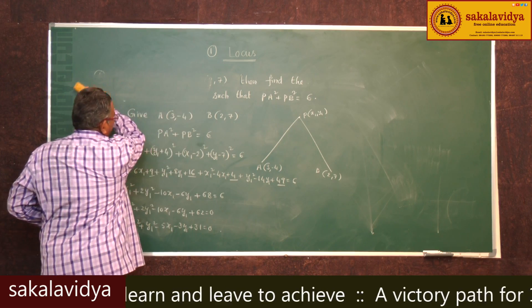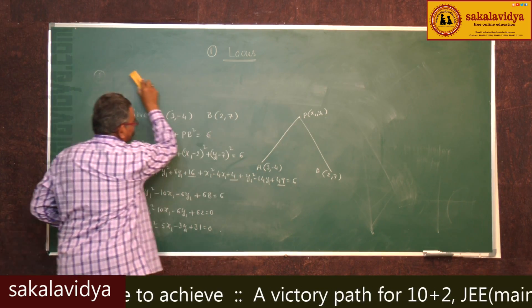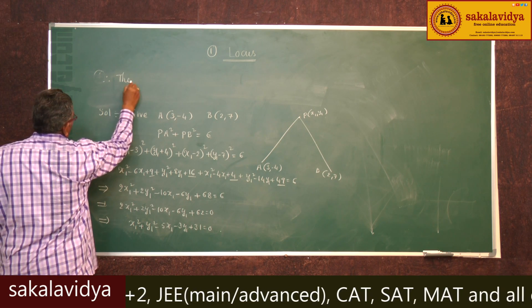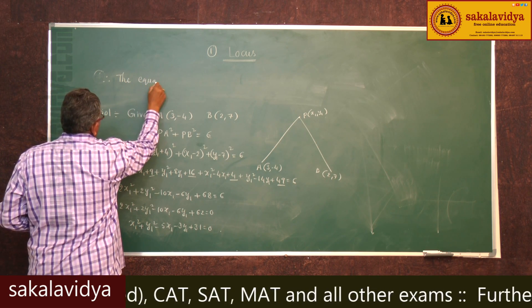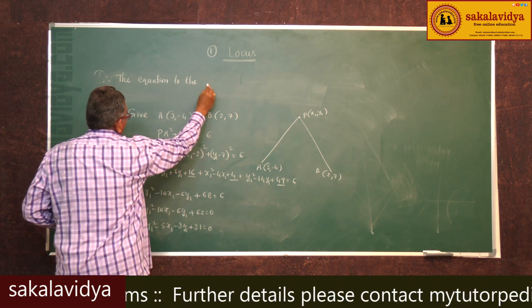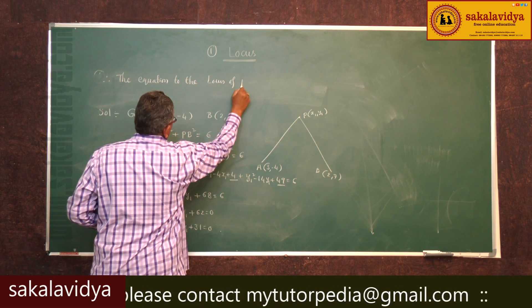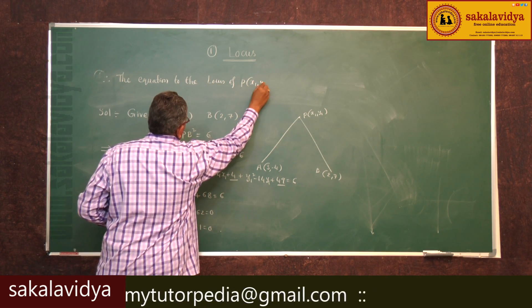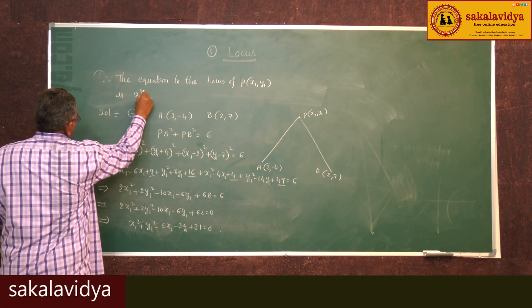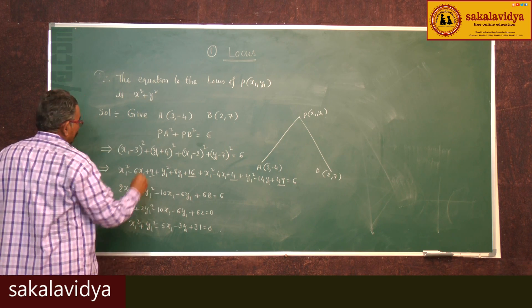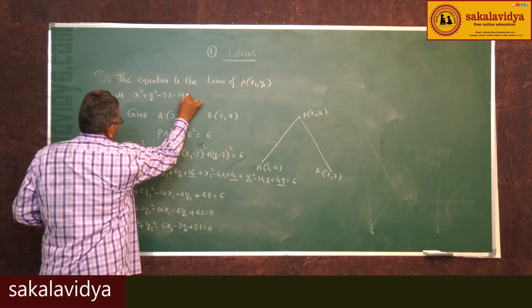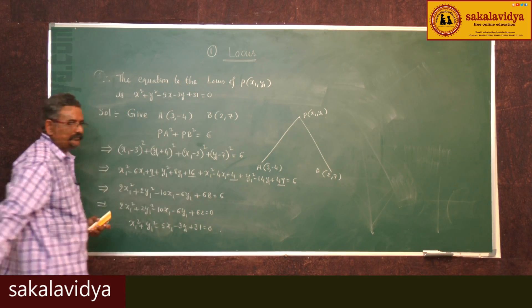The required equation of the locus: the equation of the locus of P(x1, y1) is x² + y² − 5x − 3y + 31 = 0. Thank you.